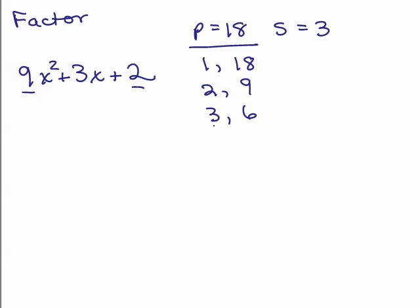Be careful, you might look at that 3 and 6 and say hey that's the right combination, 6 minus 3, but they're both positive because the product's positive, the sum's positive, so they're both positive and they add up to 9, so this one does not factor.